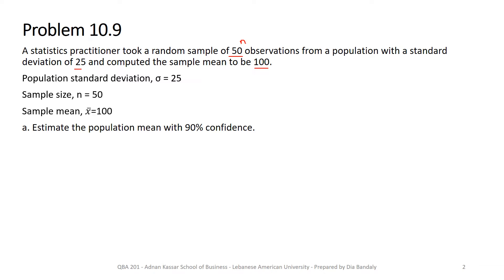Part a: we need to estimate the population mean with 90% confidence. So you know what's that? This represents 1 minus alpha. This is the confidence level 0.9.